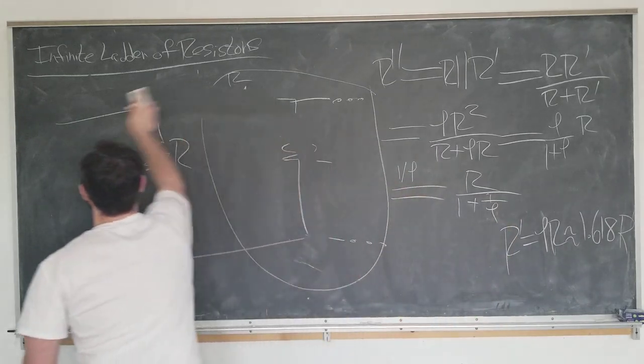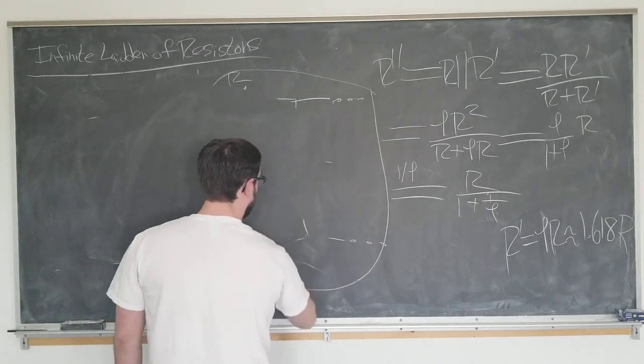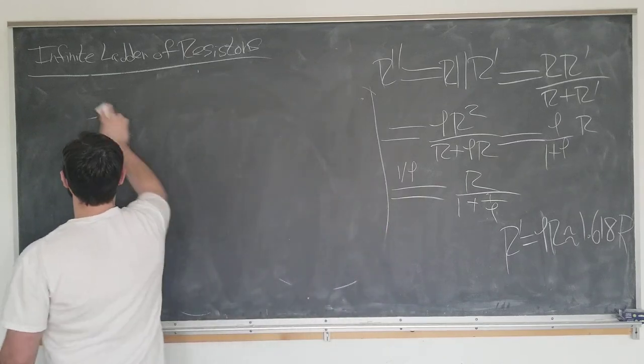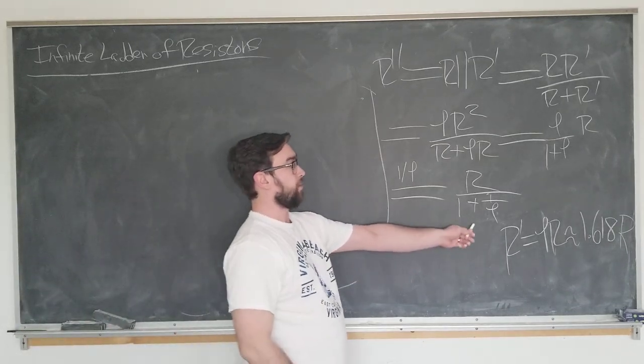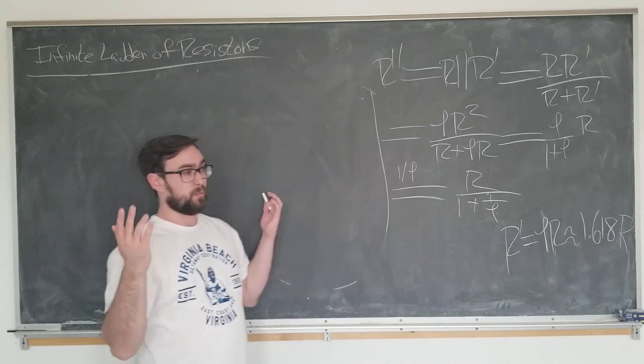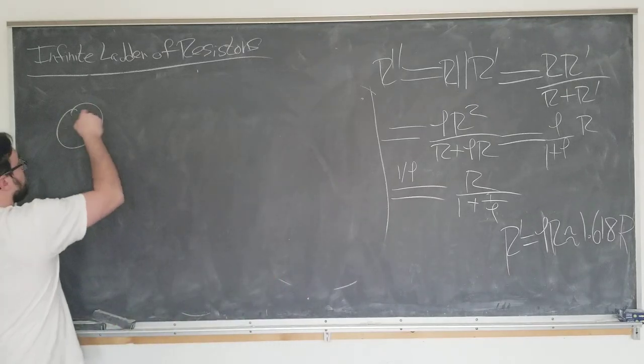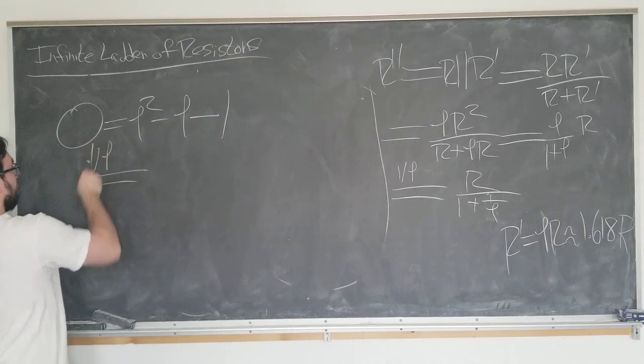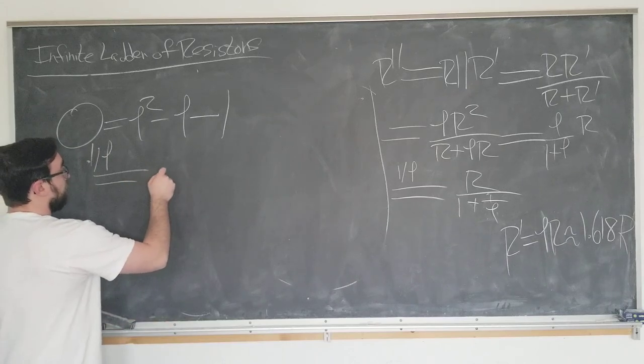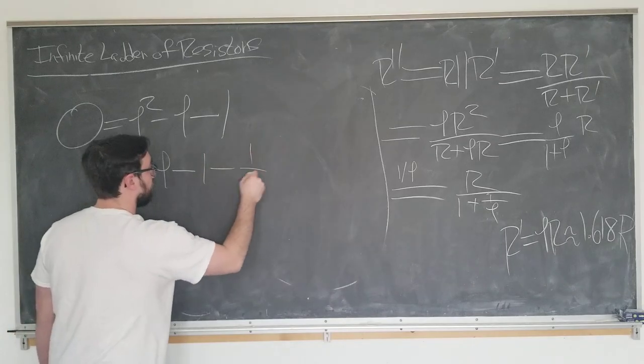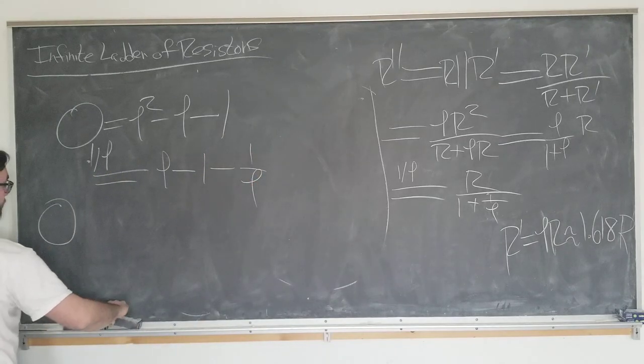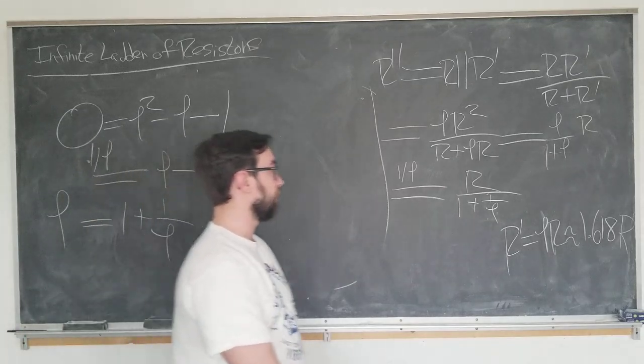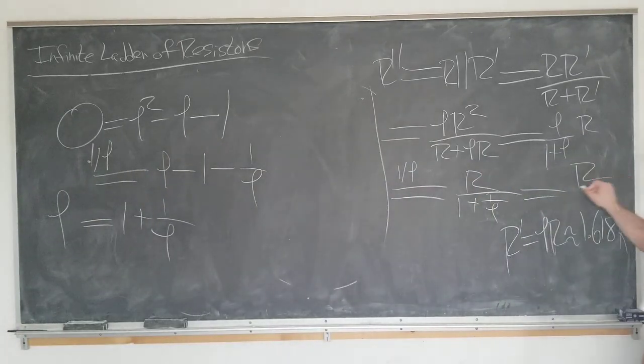And now we need one more property of the golden ratio to proceed. Not very difficult to derive though, so it'll be okay. We could stop and say, let's use our calculator to calculate 1 plus 1 over phi. But what's the fun in that? So we're going to use zero equals phi squared minus phi minus one, which we learned earlier. We're going to multiply by 1 over phi to obtain zero equals phi minus 1 minus 1 over phi. And so we obtain phi equals 1 plus 1 over phi.